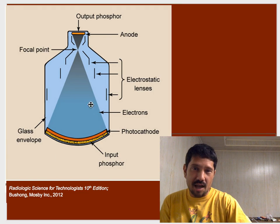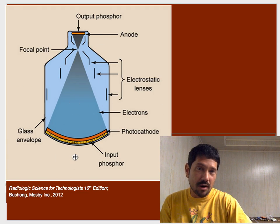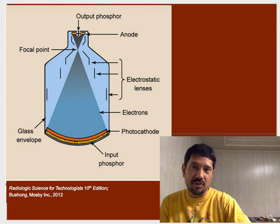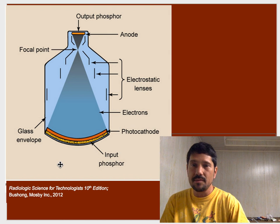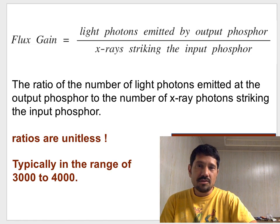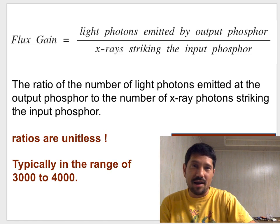When it's packaged up, of course, it looks like our big jug of water. And here's our output phosphor, typically around an inch. And here's our input phosphor that you'll find maybe 9 inch, 10 inch, 12 inches. So that flux gain is light out over X-rays in.